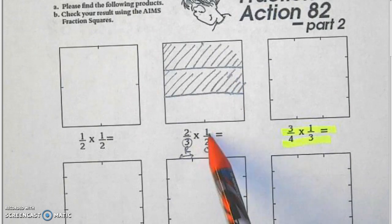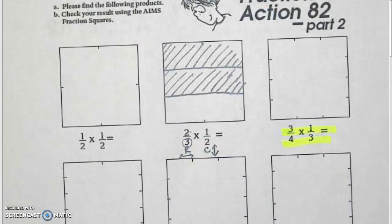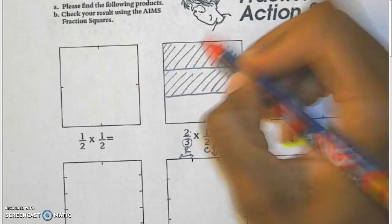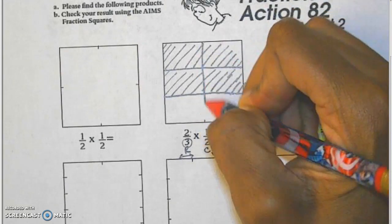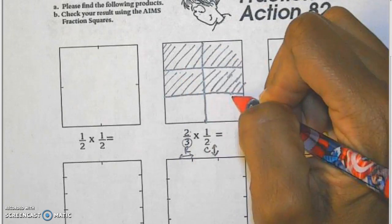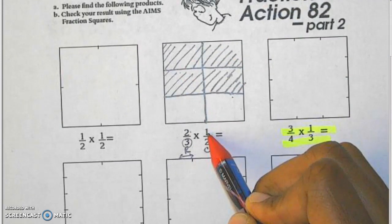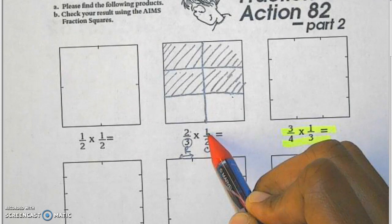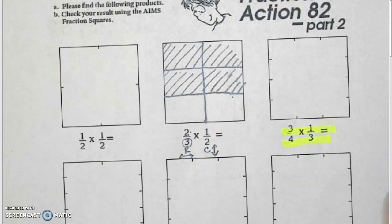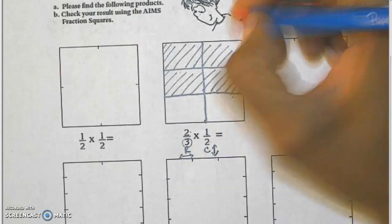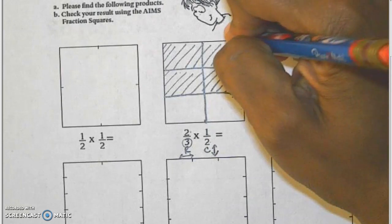Then my second fraction is one-half. So I'm going to create two columns. I'm going to break this into two columns. One, two. My numerator tells me that I should shade in one of those two columns. So again I'm using a pencil I'm going to shade and create lines going in the opposite direction.